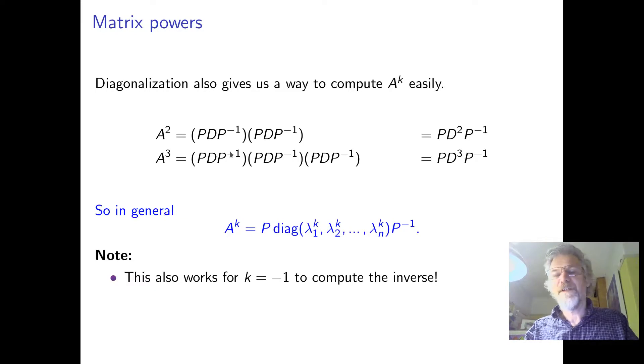Because, so if we want A squared, then that's PDP^(-1) times PDP^(-1). But look, the P inverse and the P cancel out. So that's PD squared P^(-1). And if you do A cubed, the P and the P inverse, the P and the P inverse cancel out, then it's PDDDP^(-1). And that's the point. It's easy to work out powers of a diagonal matrix. We just raise the eigenvalues, the diagonal to those powers.